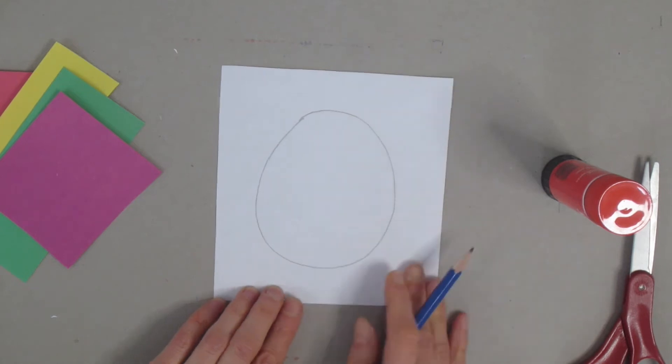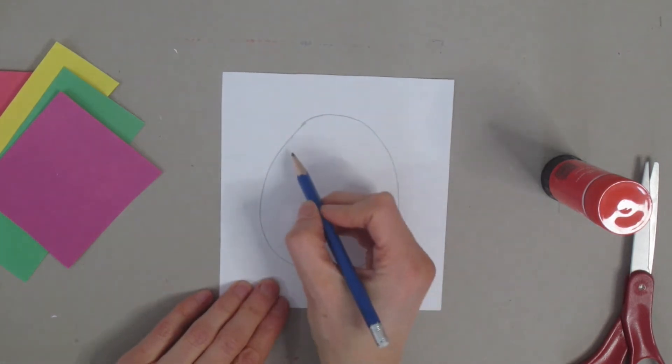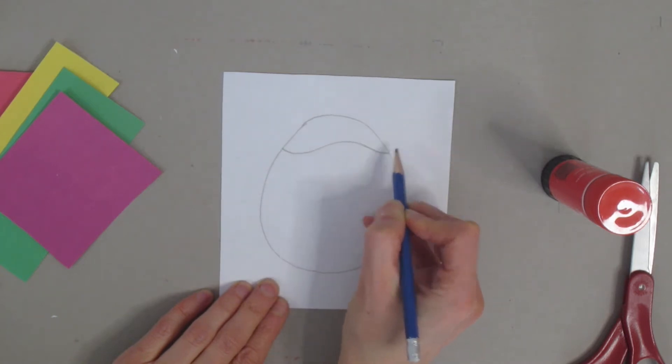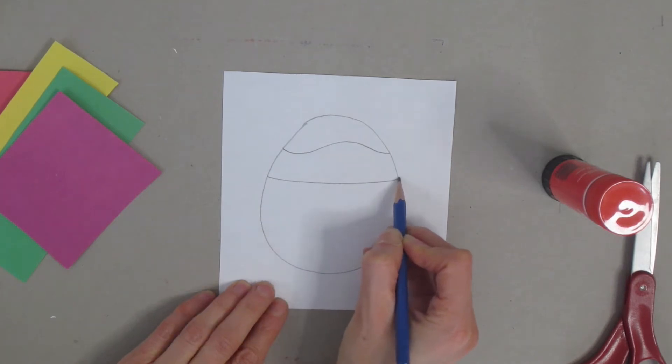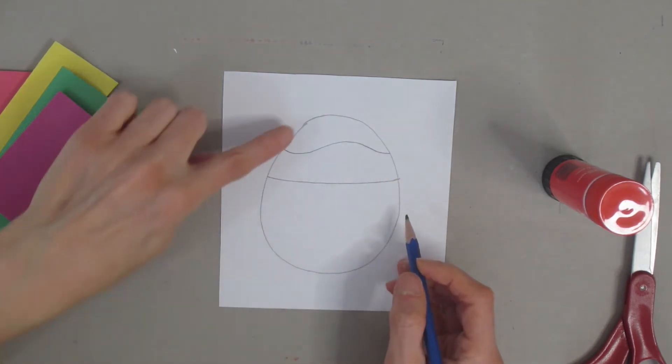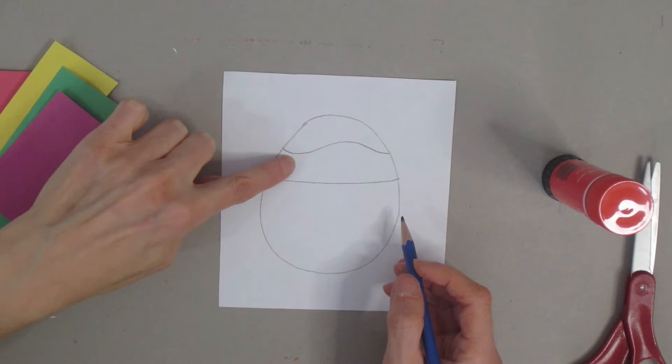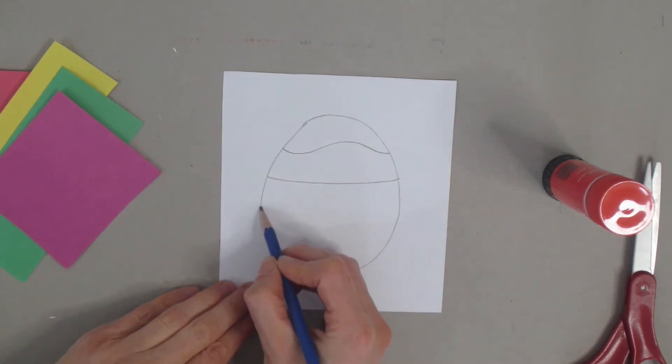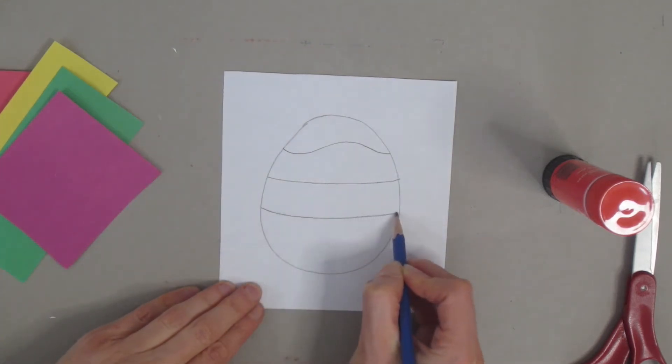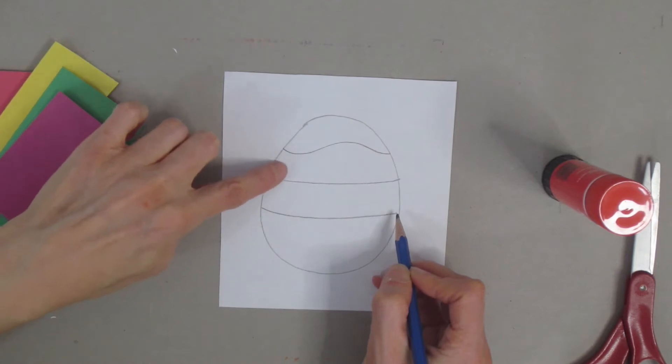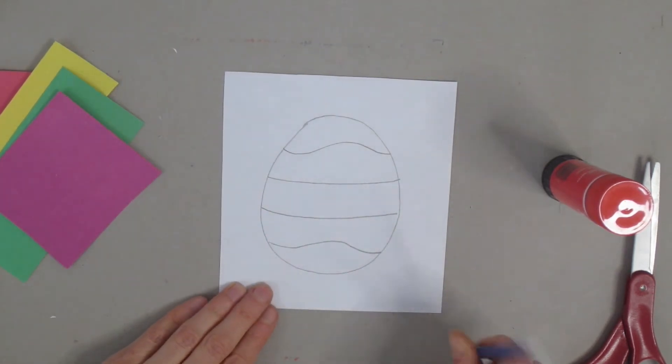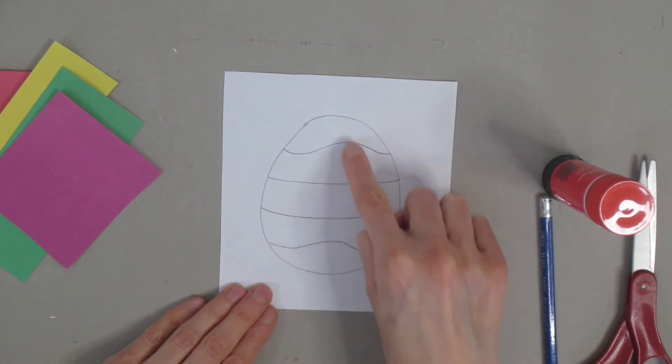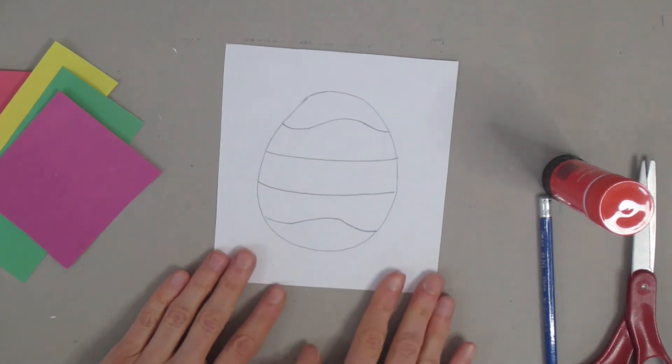Once you have your egg, you're going to put a few lines on it. I'm going to start and curve my first line down, up, and back down again. My second line I'm just going to go from one side across to the other. You want to make sure in between you have space, because we're going to be gluing paper. So each line has a space in between it - it's line, space, line, space.